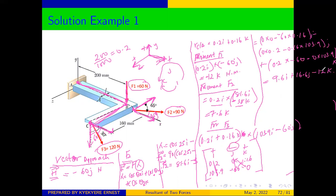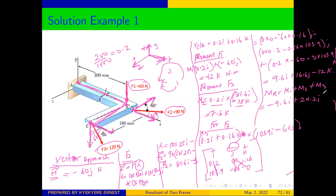Once we have determined the moment for all three individual forces, the next step is to find the resultant moment by summing them. We collect all I components together, all J components together, and all K components together to get our final resultant moment: negative 9.6i plus 24.2j minus 24.2k Newton-meters.